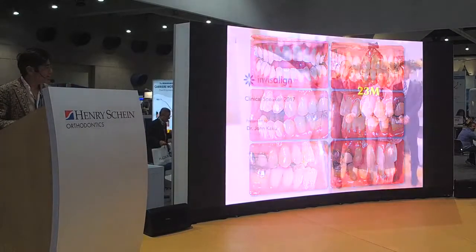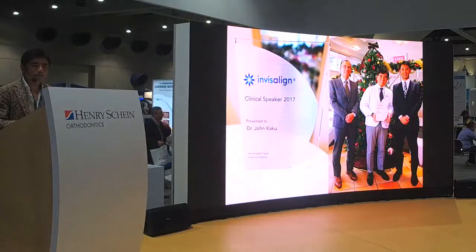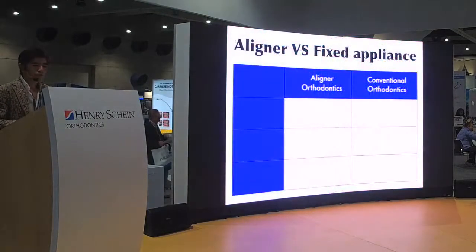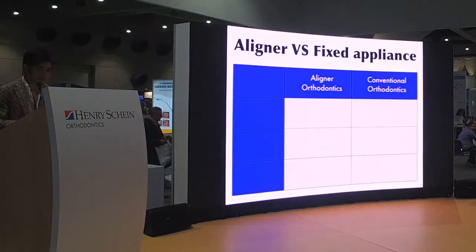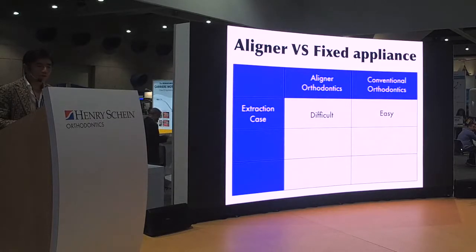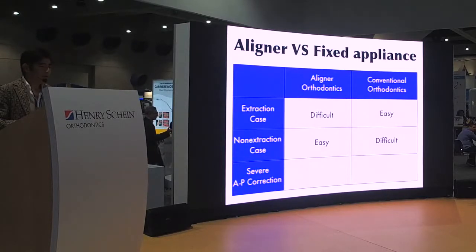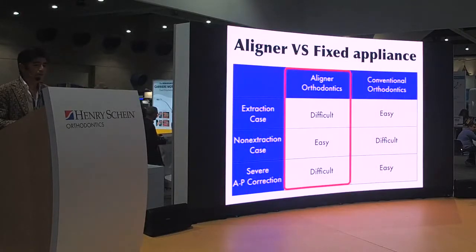I am a clinical speaker for Align Technologies. I have many cases treated with combinations of Invisalign and motion appliance, and I want to show you some of the advantages of combining them together. With conventional wire orthodontics, crowding, severe overjet, overbite, and extraction cases are easy to manage. But non-extraction treatment with aligners is relatively easier only when there is not much severe AP correction needed. What do you do if the patient has severe overjet?